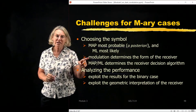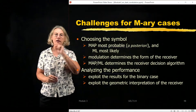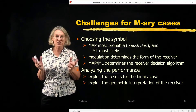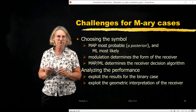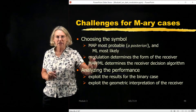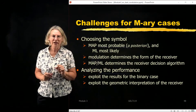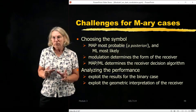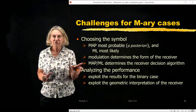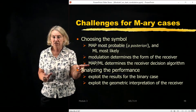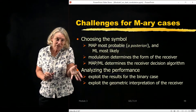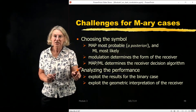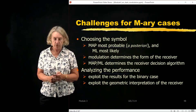The modulation format — PSK, QAM, FSK — is going to determine the form and complexity of the receiver. Whether we use MAP or ML is really going to determine the decision algorithm in the receiver, but not necessarily its structure. We look at test statistics to understand why they're different for different modulations and how they differ for MAP and ML, and eventually we'll use these results to analyze performance.